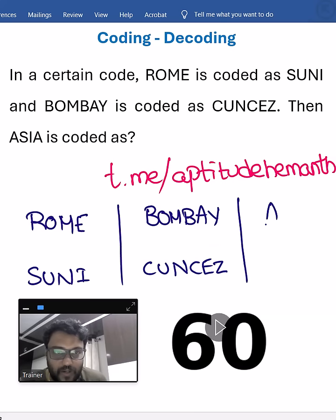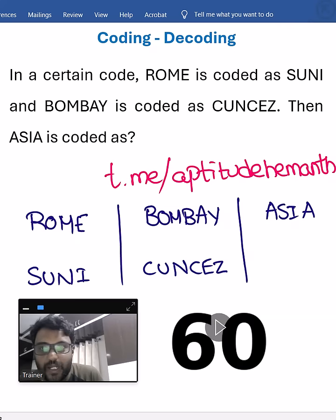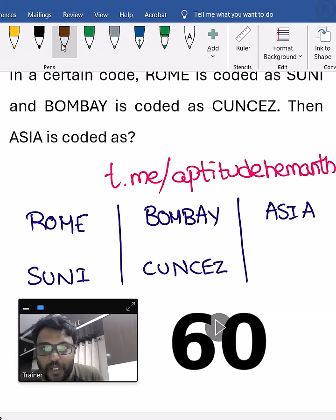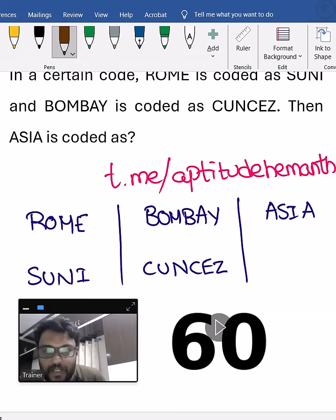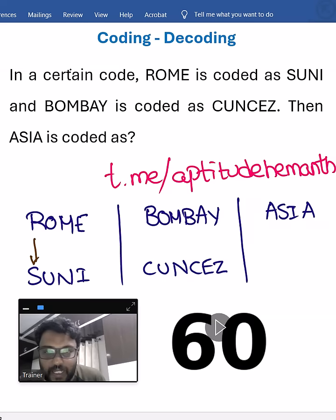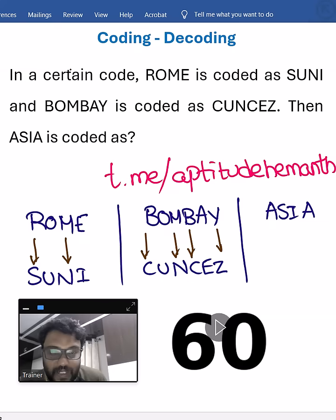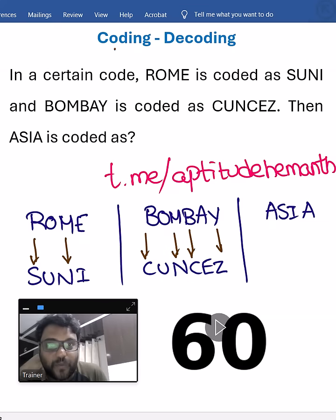The question is: Asia is coded as what? If you observe carefully, R's next letter is S, M's next letter is N, B's next letter is C, Y's next letter is Z. But importantly, this question is about the treatment of vowels differently.